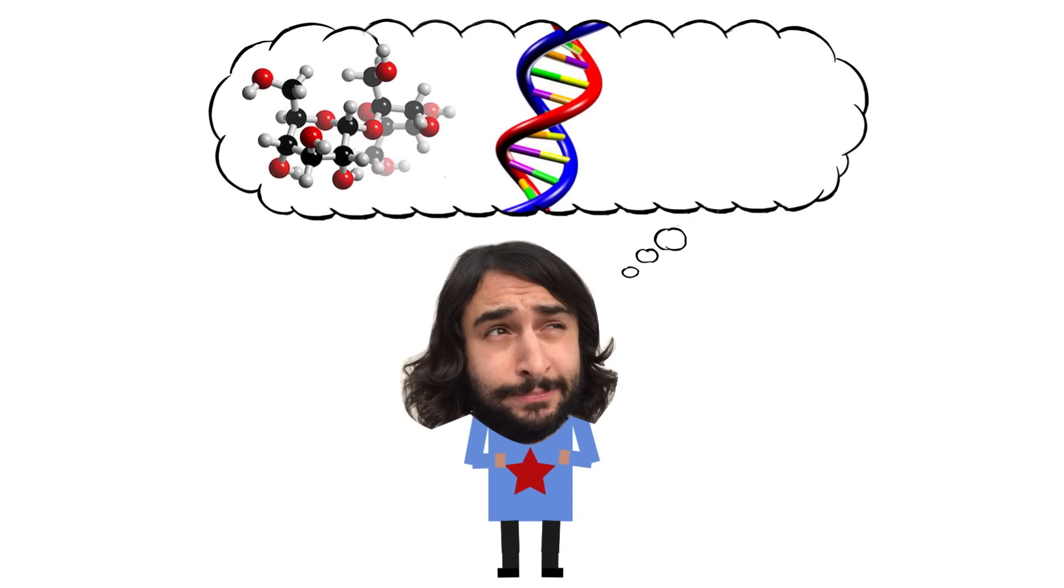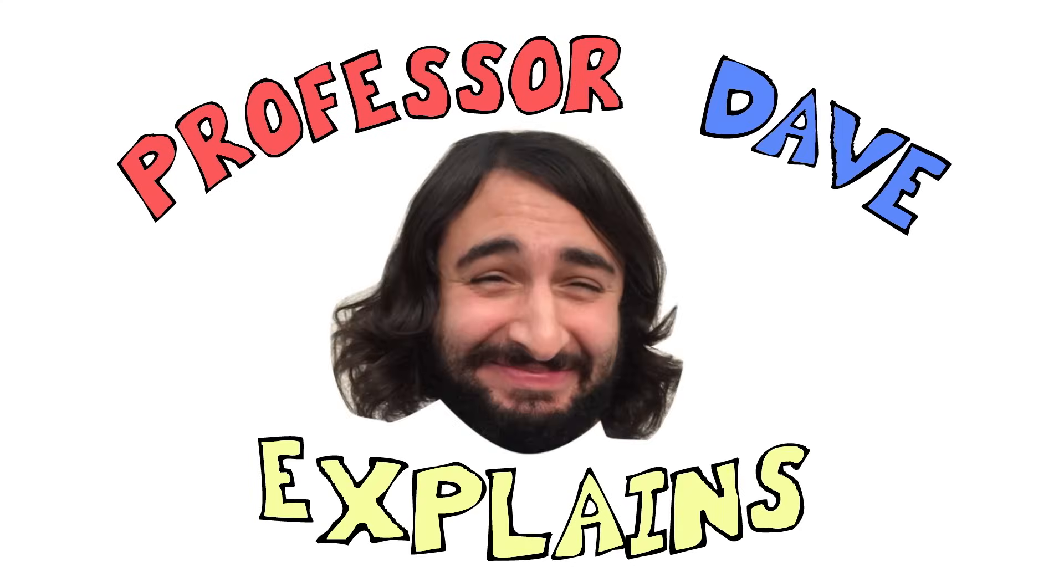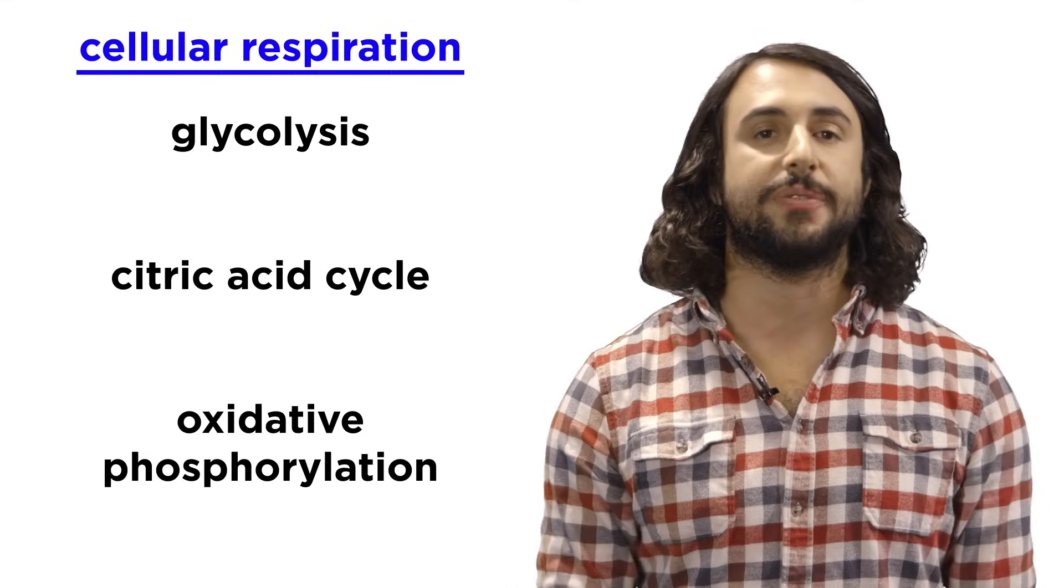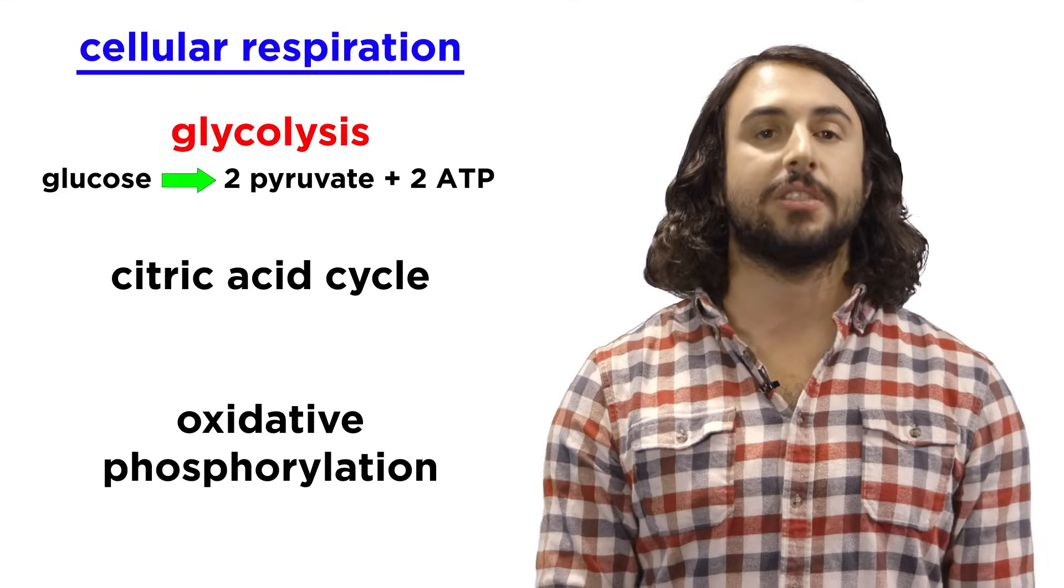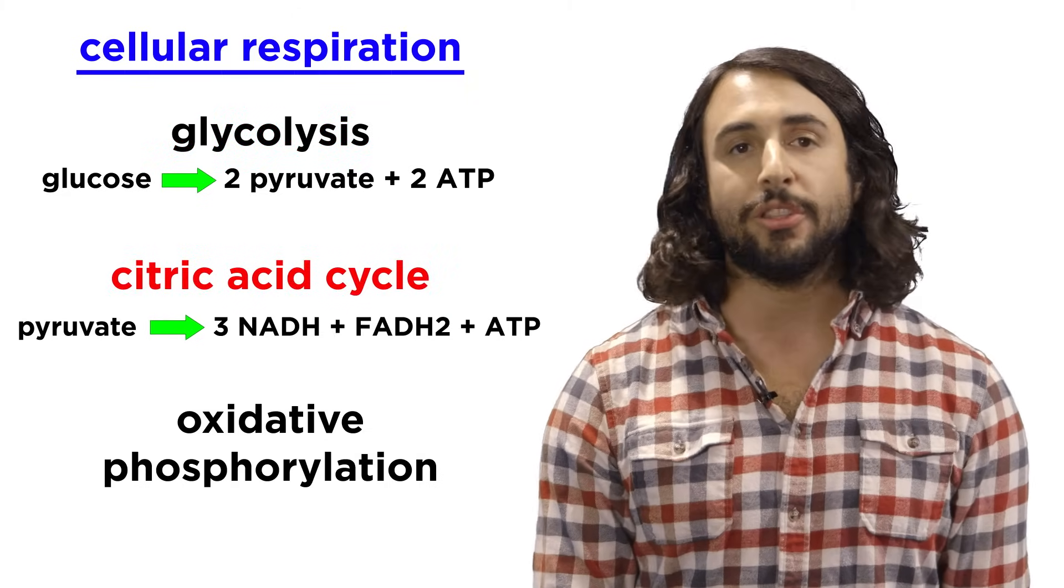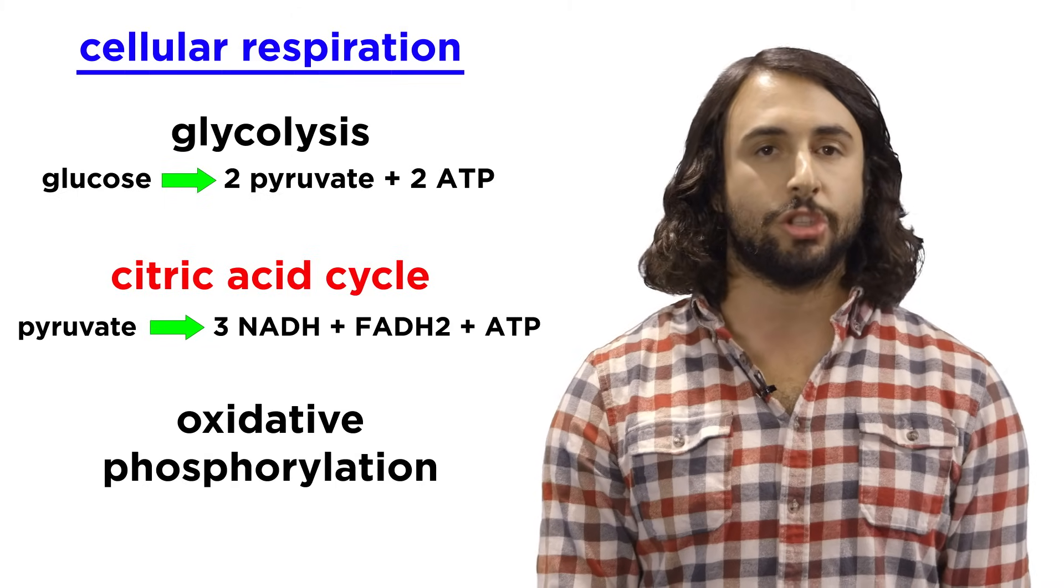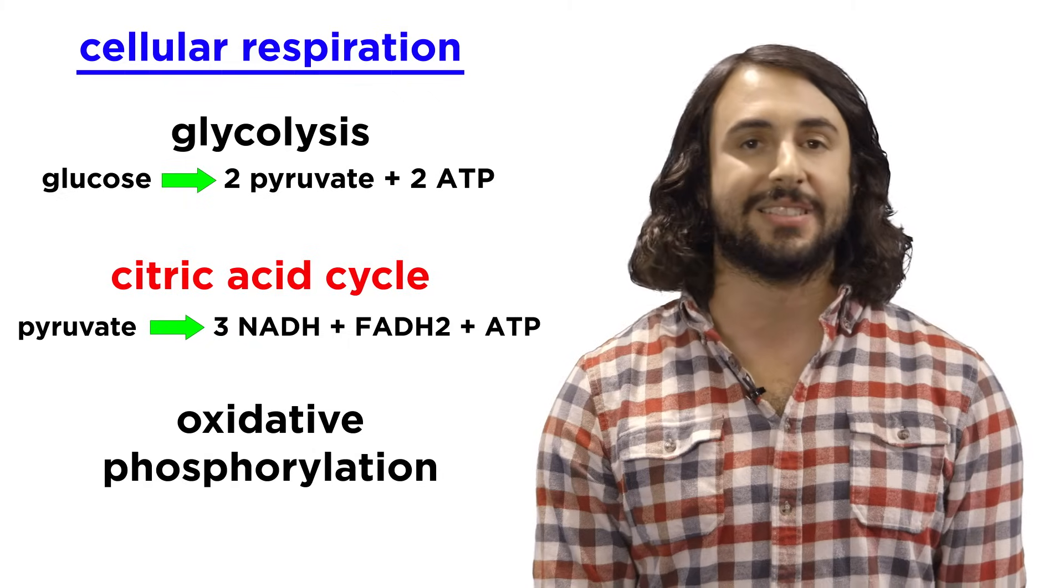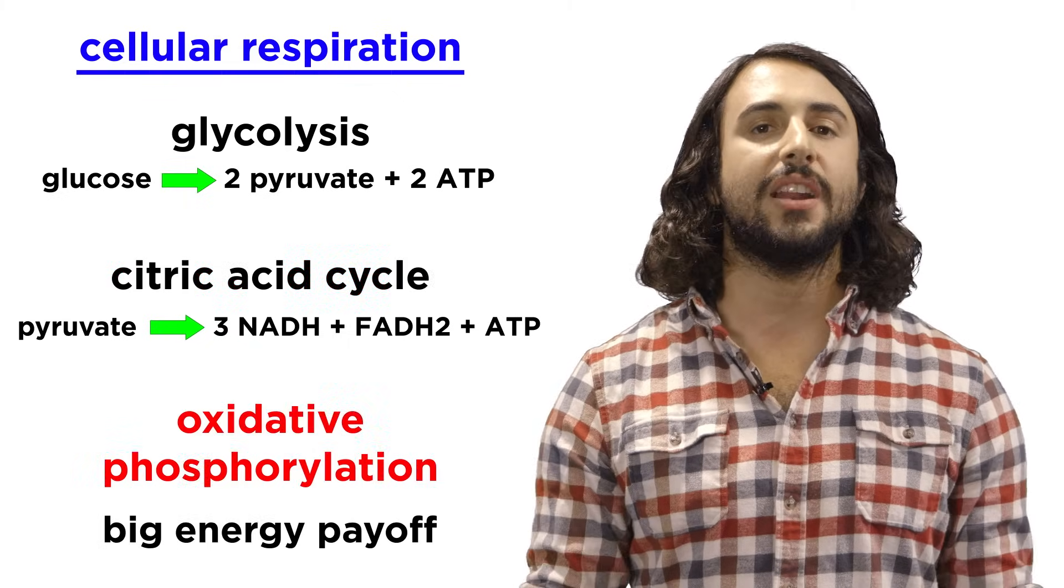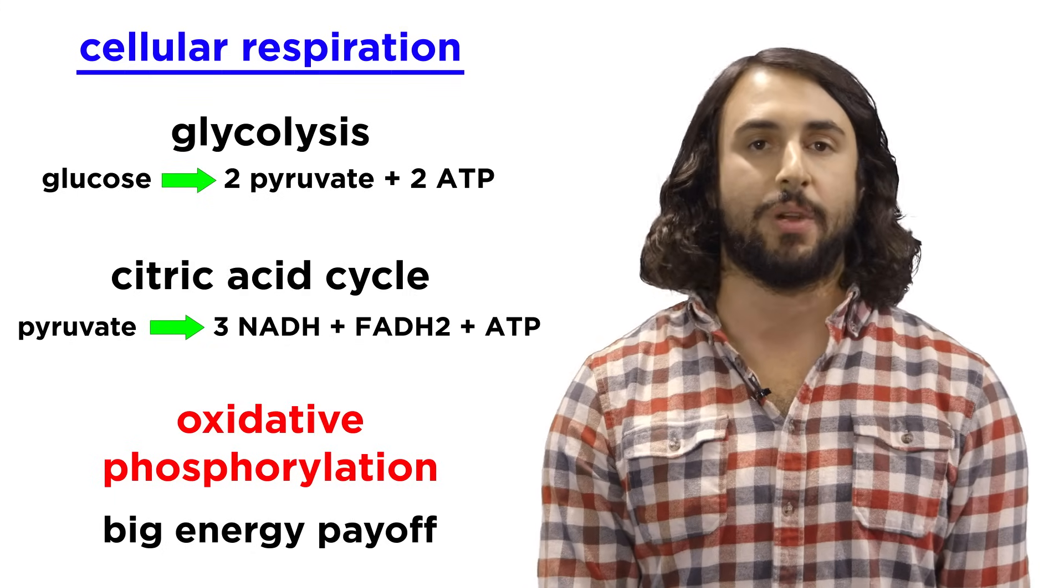Professor Dave again, let's take a look at oxidative phosphorylation. We've examined the first two steps of cellular respiration, these are glycolysis and the citric acid cycle. As it turns out neither process generates much of an energy payoff, but the NADH and FADH2 that were generated in the citric acid cycle move on to oxidative phosphorylation, which generates by far the most ATP out of these pathways.